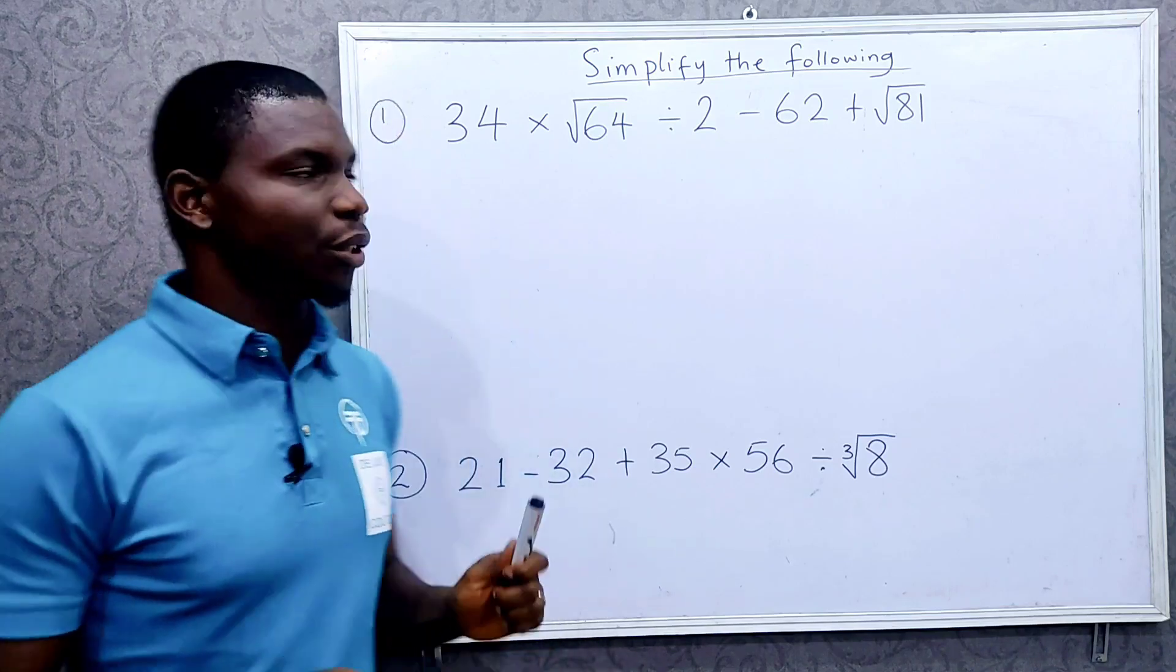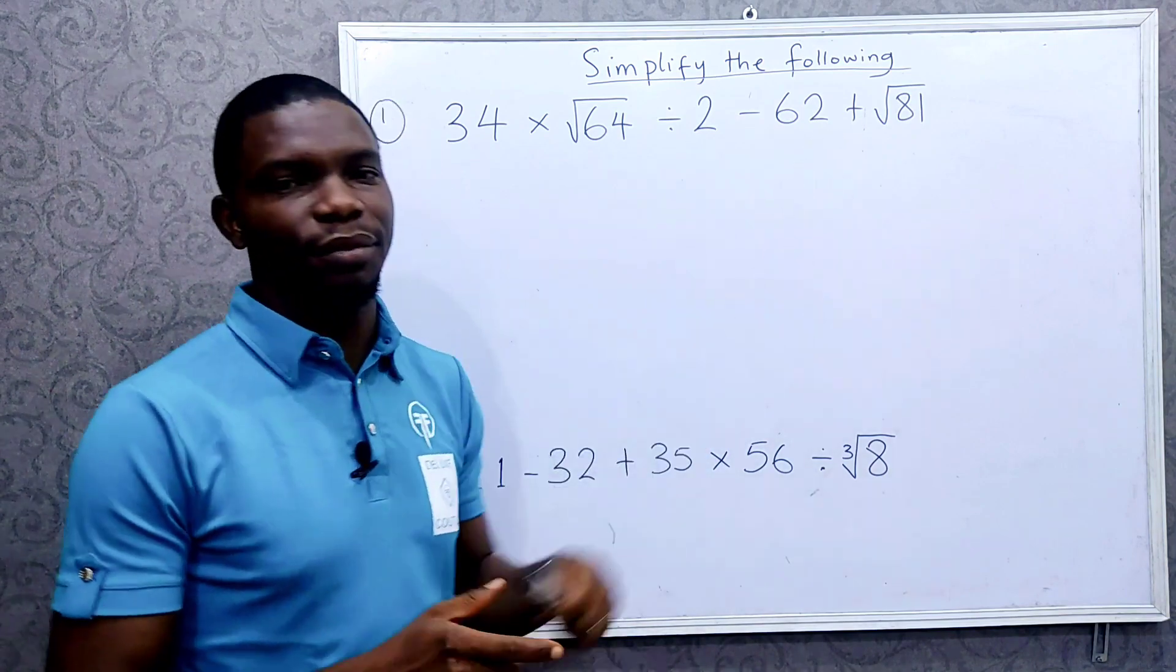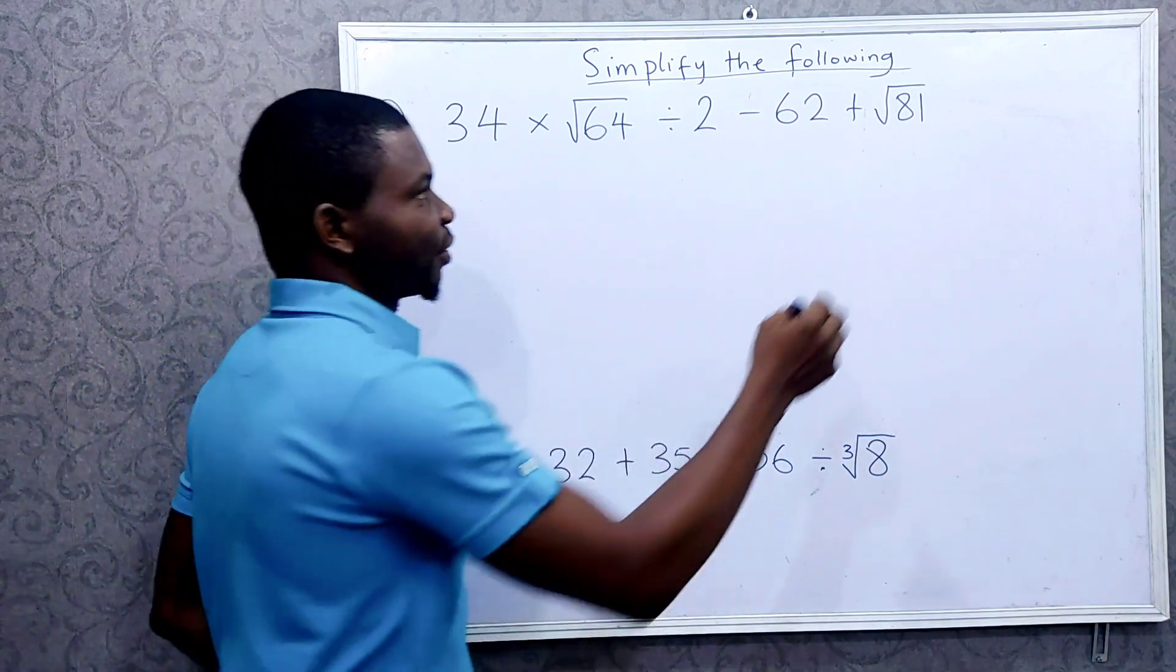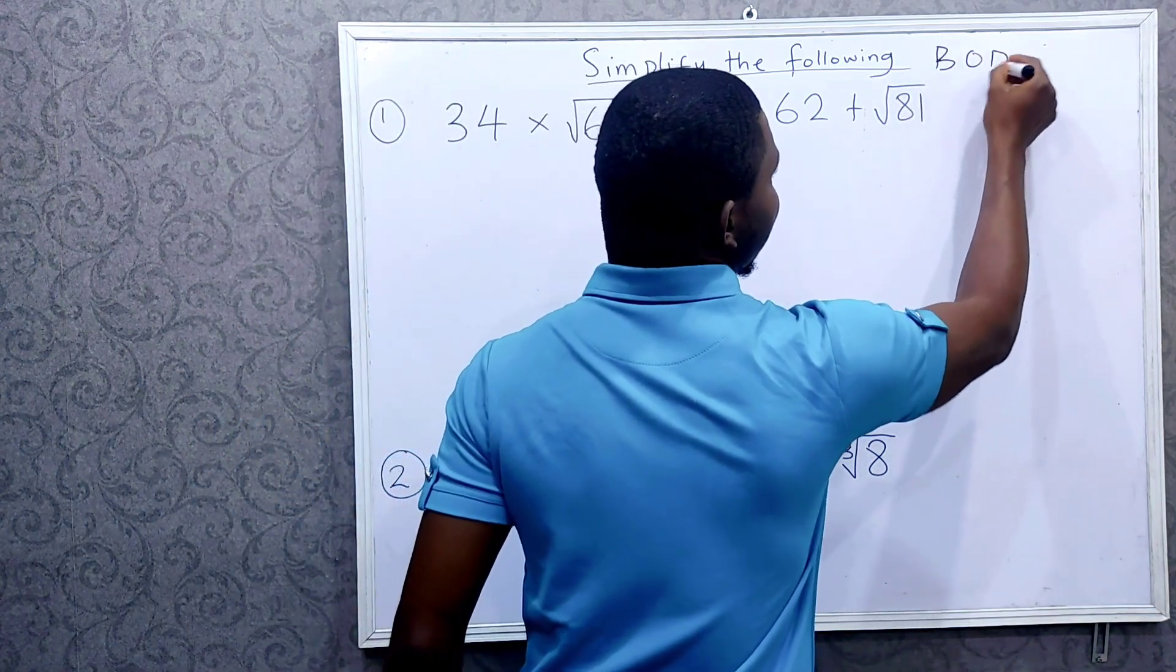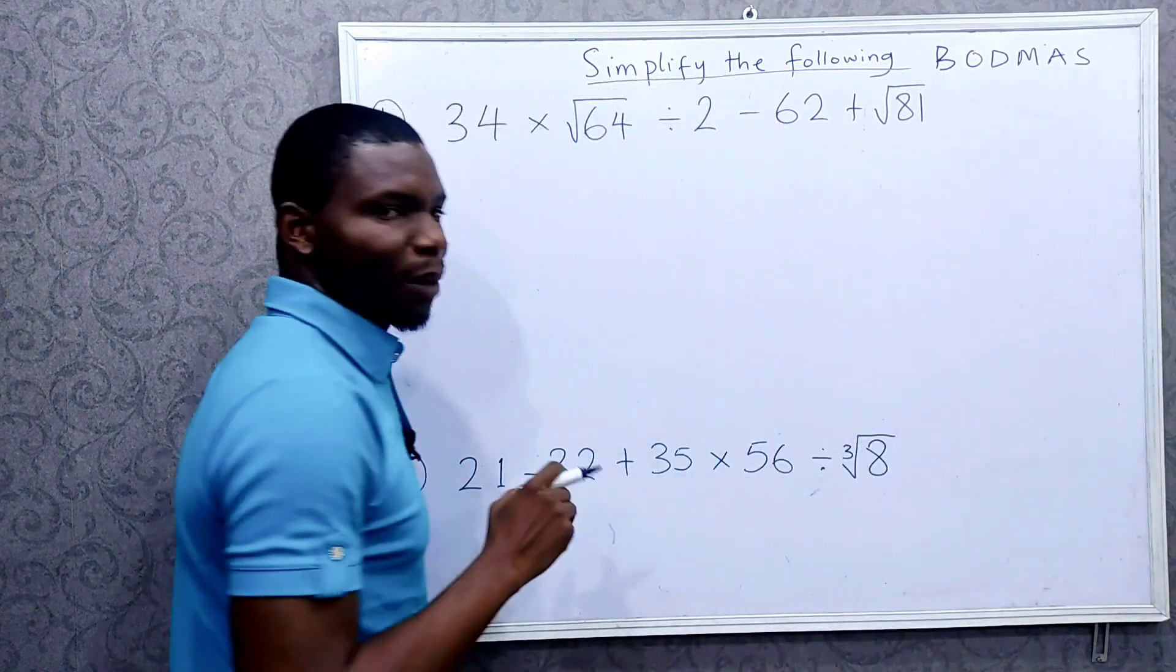How do you simplify an expression with so many operators like this? We use what we call BODMAS. I know many of us know what BODMAS is, but we don't really know how to apply it.